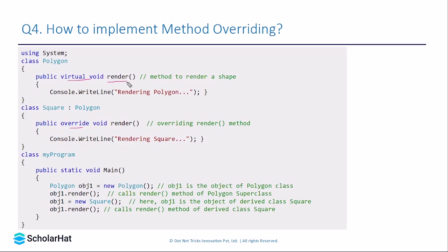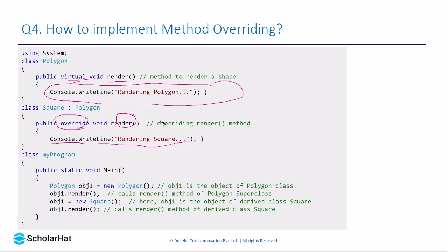We can do this using the virtual and override keywords. If we want to override the Render method in the derived class, we must use the virtual keyword in the base class. In the derived class we use the override keyword. When the compiler sees the override keyword, it will execute the statement written inside the derived class and not the one inside the base class.